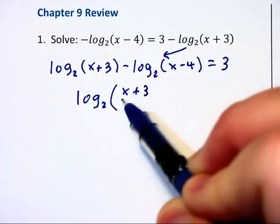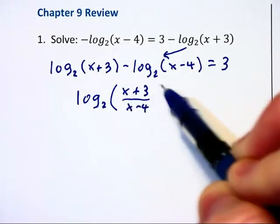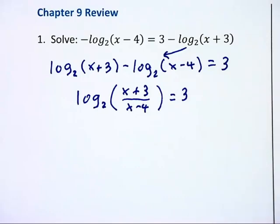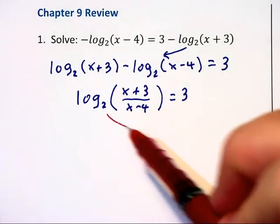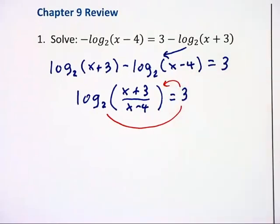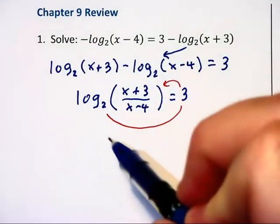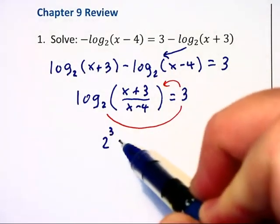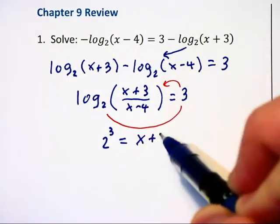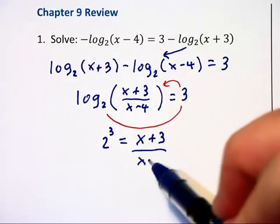x plus 3 over x minus 4 is equal to 3. I don't like to have this logarithmic equation, so I'm going to switch it into an exponential equation, rewriting it as 2 to the third equals (x+3) over (x-4).